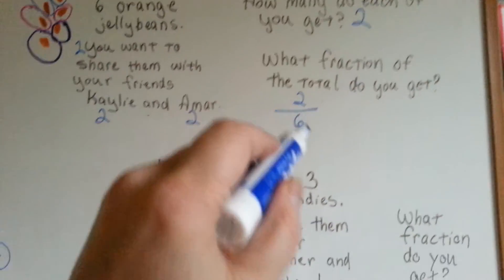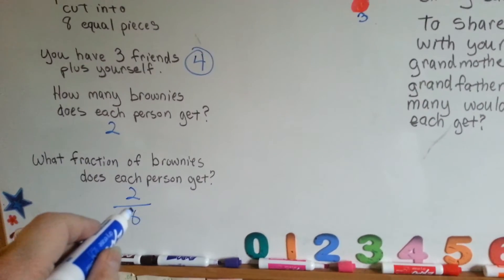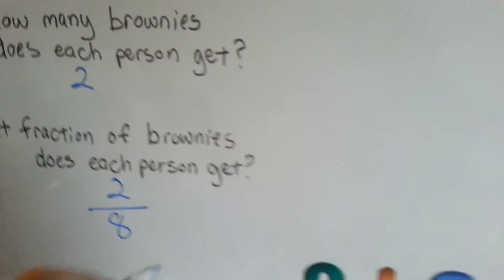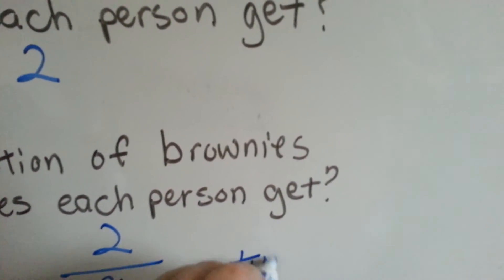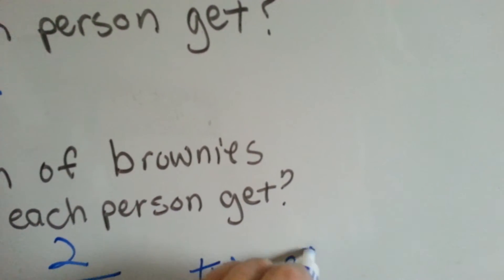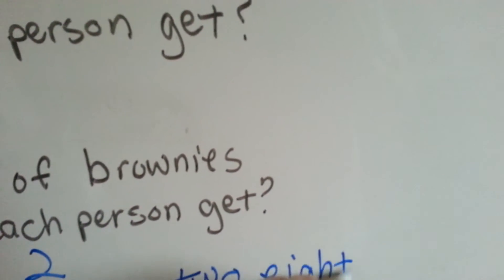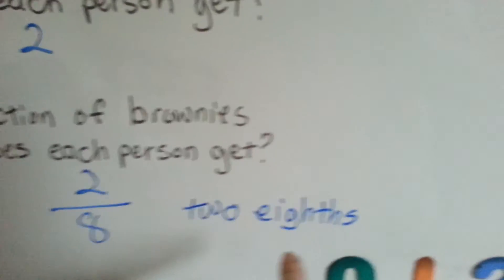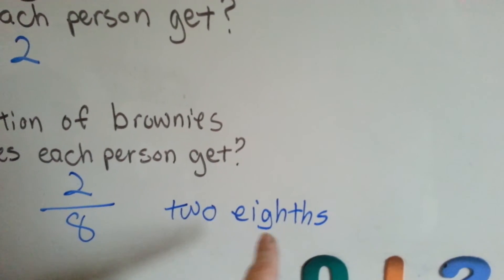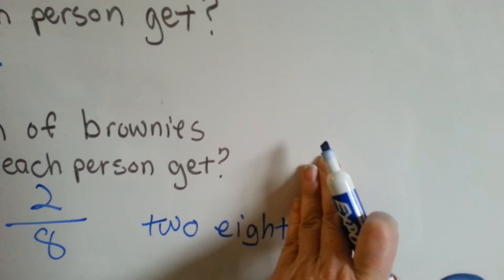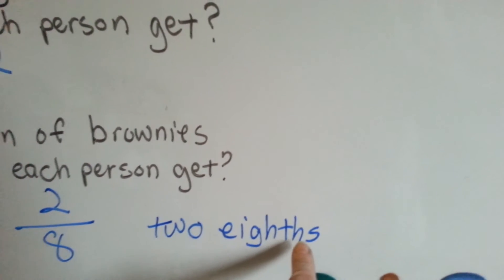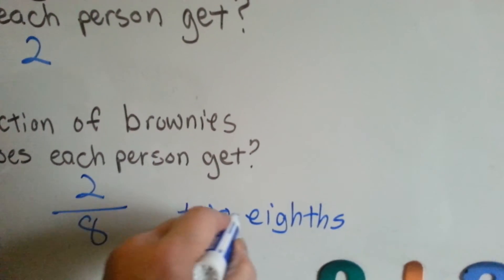This is two sixths and this is two eighths. This is what it looks like. Two eighths. Look at all those H's there. You write the word eight and because it ends with a T, you just add HS at the end. Two eighths.